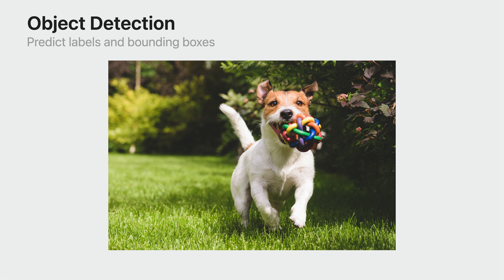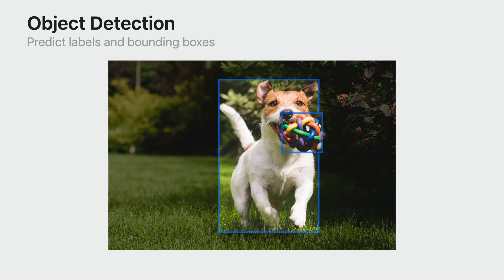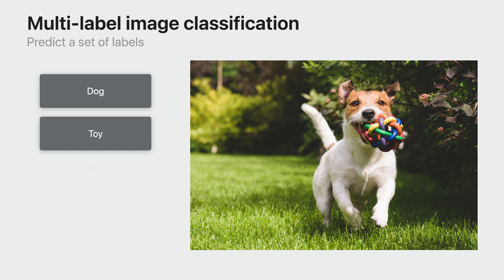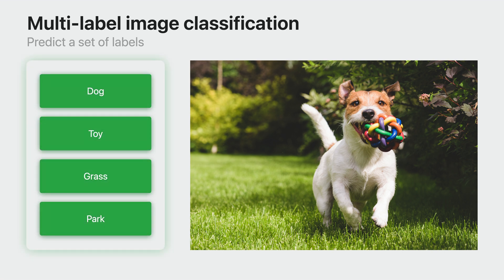If you're interested in objects, you can use the object detector to locate objects within a scene — for example, drawing a bounding box around a dog and another one around a ball. But I'm also interested in the scene that the objects are in. I can't really draw a bounding box to represent that the dog is in a park or outdoors. That's where the new multi-label image classifier comes in. It allows you to predict a set of objects, attributes, or labels for your images. For example, this image contains a dog, toy, grass, and park.